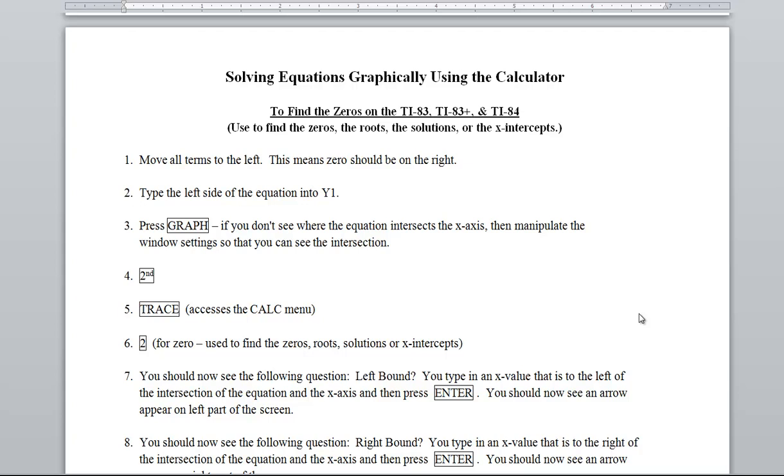Now we're going to solve equations graphically using the calculator. We've been working with quadratic equations but this process can be used for any type of equation. This is called finding the zeros. When you find the zeros, sometimes it's called finding the roots, the solutions, or the x-intercepts. First thing you've got to do is make sure all your terms are to one side, normally the left, which means zero should be on the right. That's where they get the word zero.